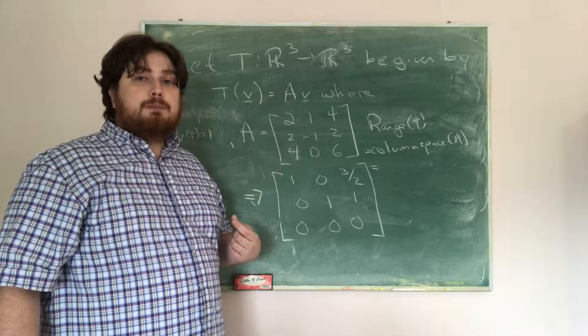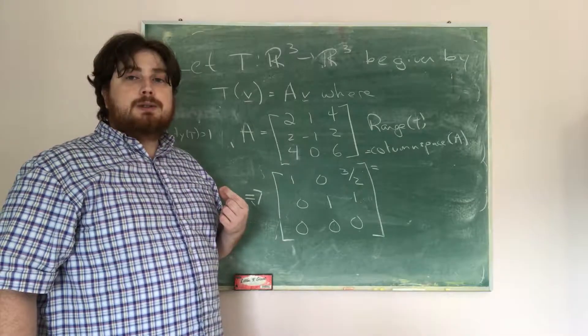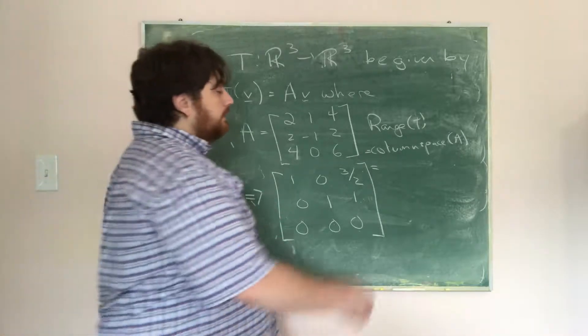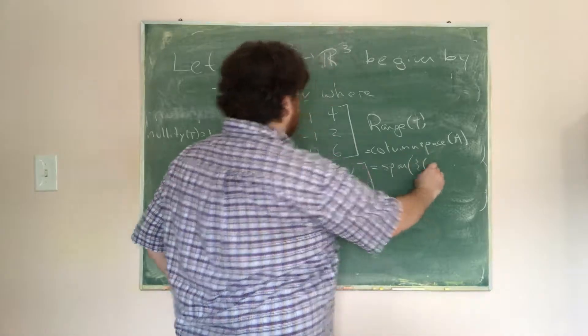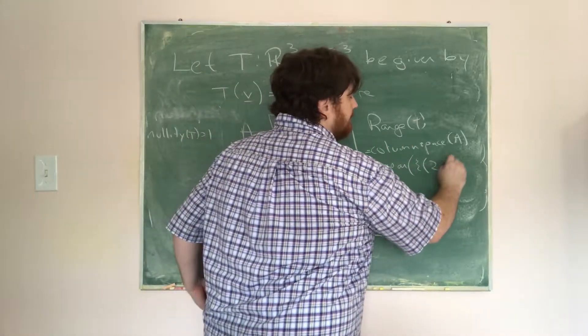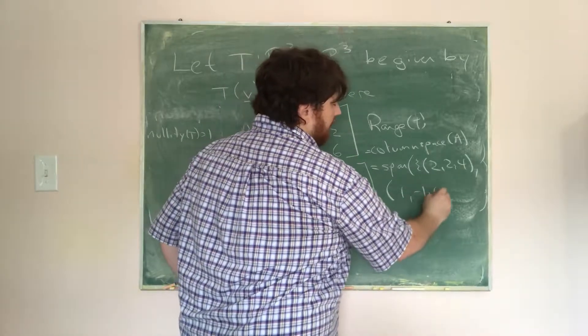Therefore, if I want to find the basis of the column space, I'm going to pick the first column and the second column of my original matrix. So therefore, the column space is just the span of the set of vectors 2, 2, 4, and 1, negative 1, 0.